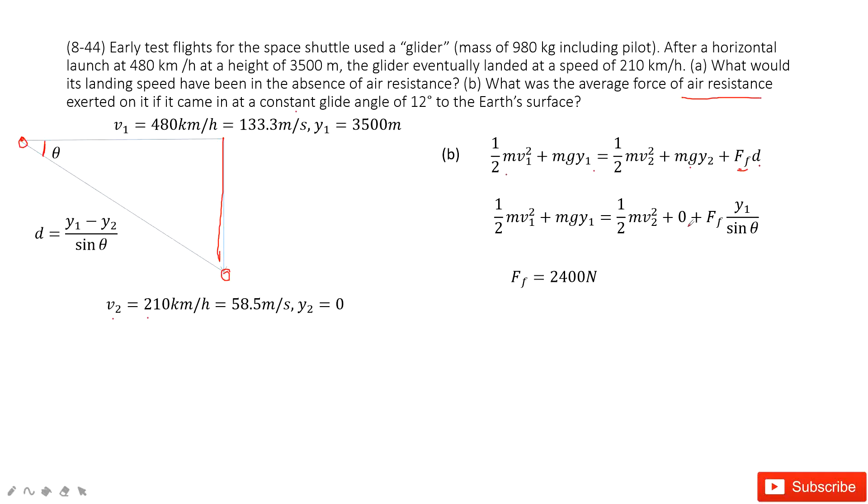Then we can input the known quantities, y2 equals 0. And you can see in this equation, v1 is given, y1 is given, v2 is given, mass is given. So super easy. You can get the friction force: 2400 newton. Thank you.